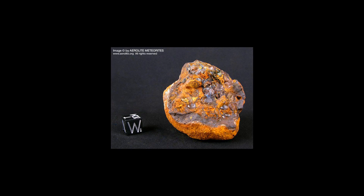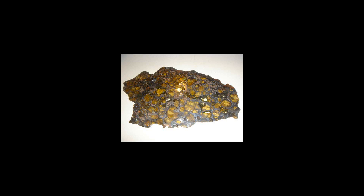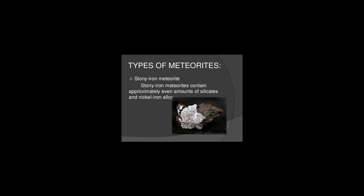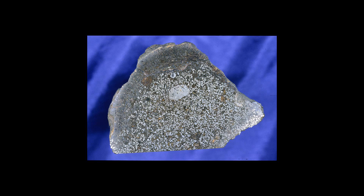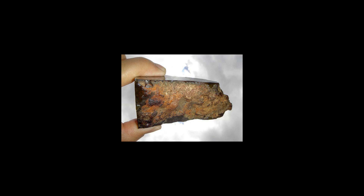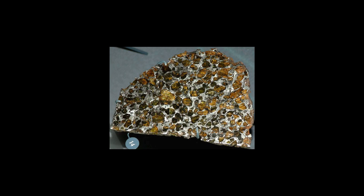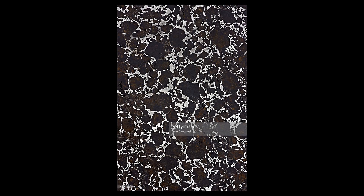Stony iron meteorites are all differentiated, meaning that they show signs of alteration. They are therefore achondrites. The stony irons are divided into mesosiderites and pallasites.